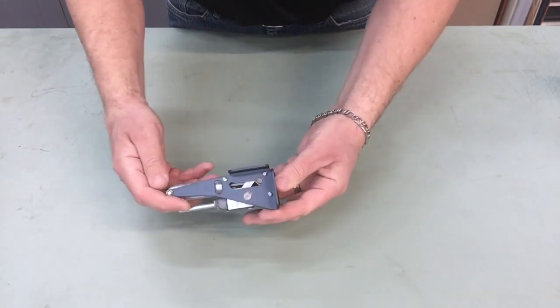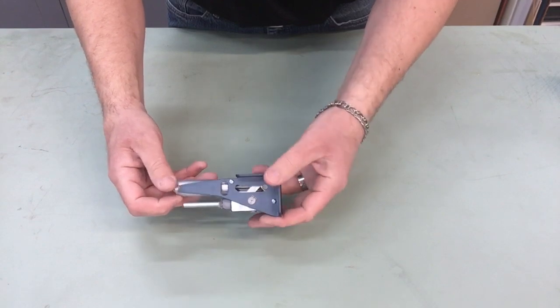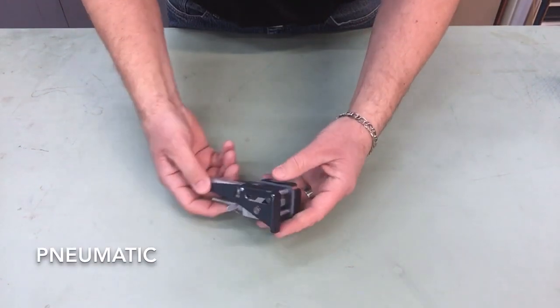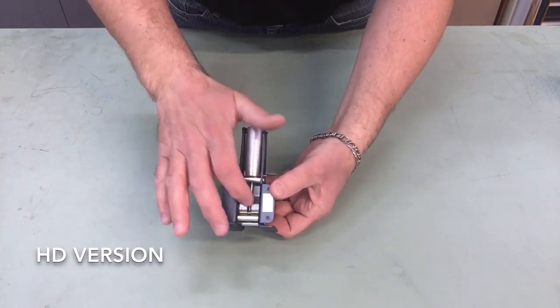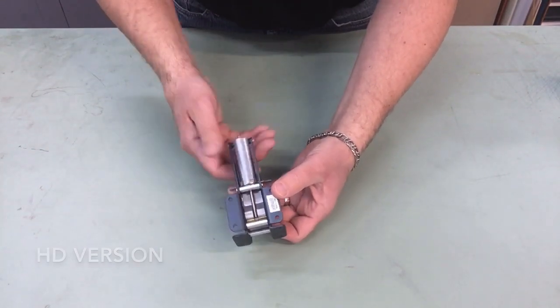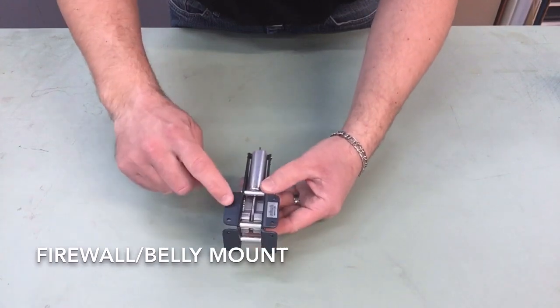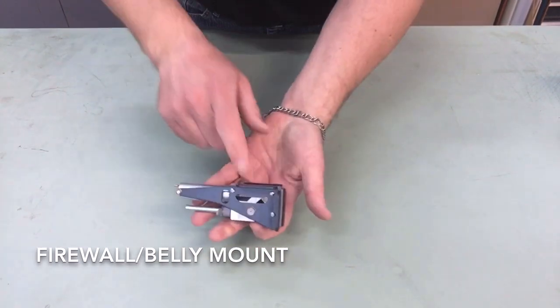The 643 HDRS is a pneumatic landing gear. This is an HD version so it has a bigger trunnion. This is a firewall or belly mount.